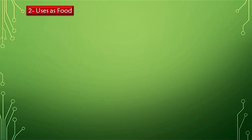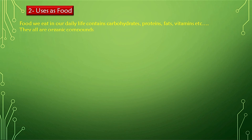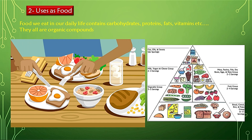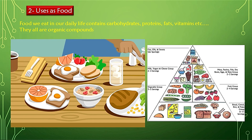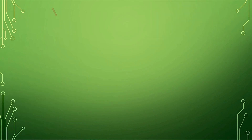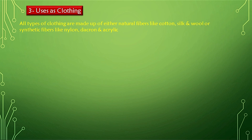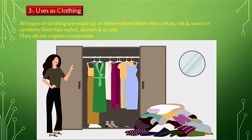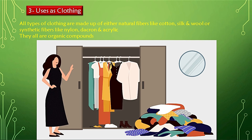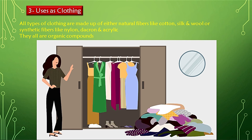Organic compounds can also be used as food. The food we eat in our daily life contains carbohydrates, proteins, fats, and vitamins — and all of these are organic compounds. Organic compounds are also used as clothing. All types of clothing are made from either natural fibers like cotton, silk, and wool, or synthetic fibers like nylon, Dacron, and acrylic — and all these compounds are organic in nature.